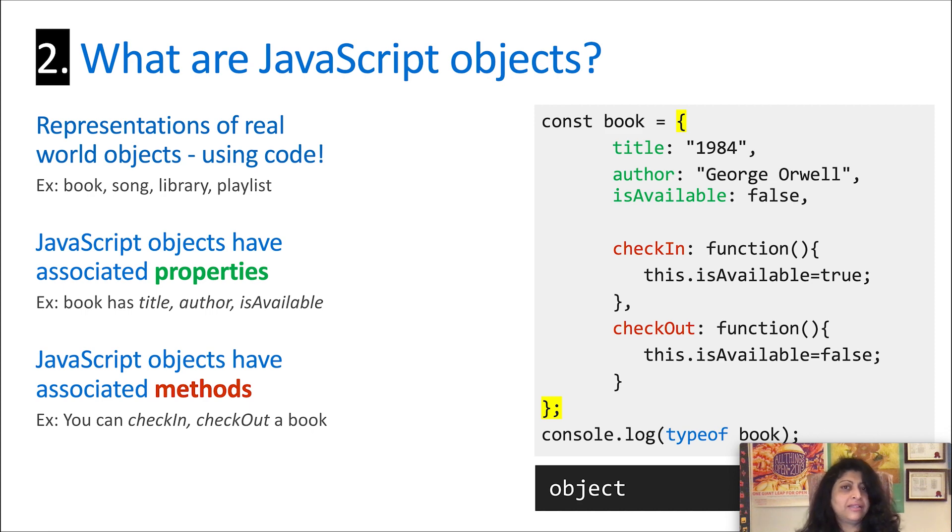The one thing you can take away from objects looking at this definition is that properties are simply variables associated with the object, and methods are simply functions associated with that object.